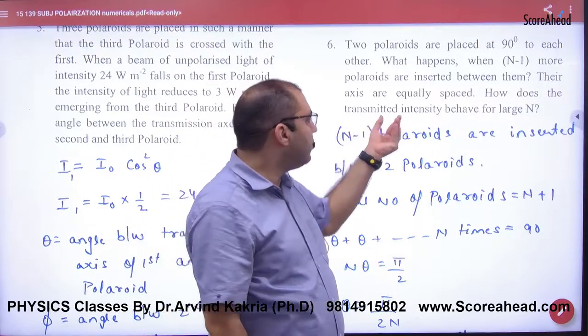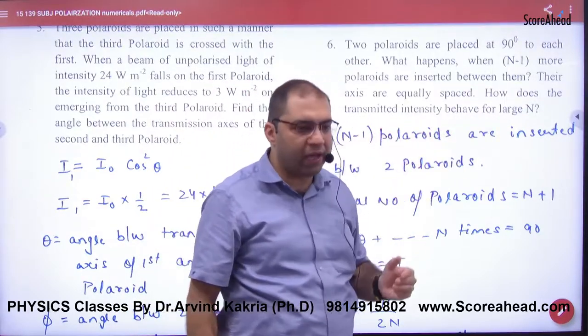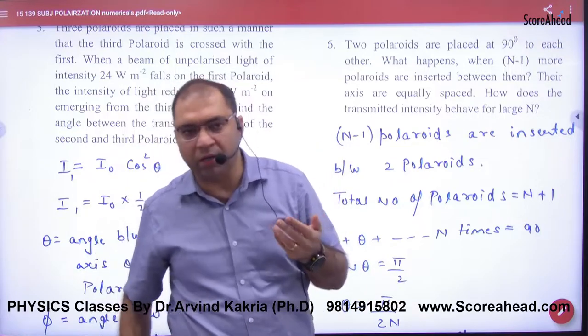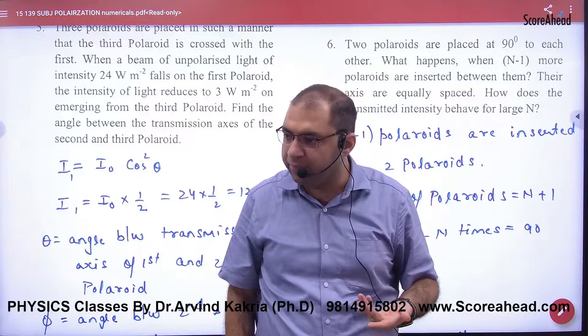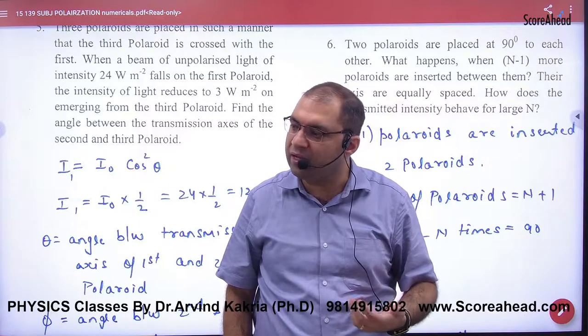Now, how does transmitted intensity behave for large N? If the number of Polaroids are very big, then what will be intensity? Let's do this work. Let's determine what intensity will happen.